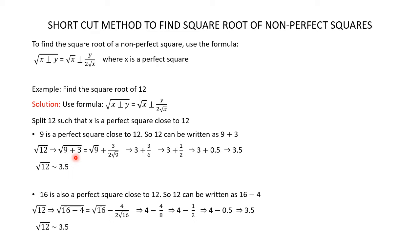According to the formula, the square root of (9 + 3) equals the square root of 9 plus 3 divided by 2√9. The square root of 9 is 3, so 2√9 is 2 × 3 = 6. Now we have 3 + 3/6. Since 3/6 is 1/2, we get 3 + 0.5, which is 3.5. So the square root of 12 is approximately equal to 3.5.